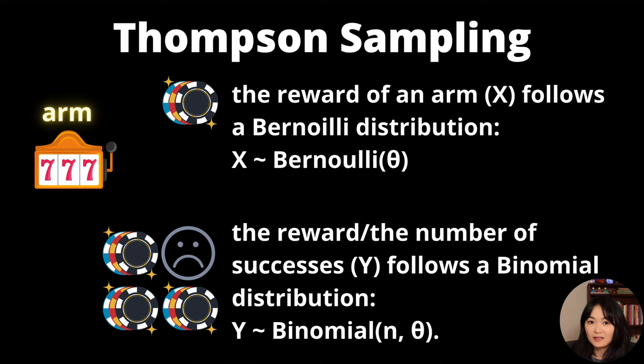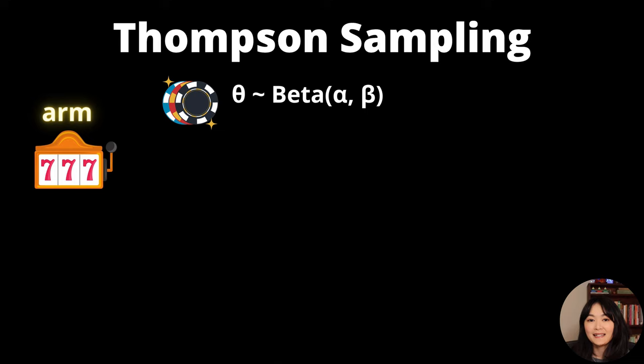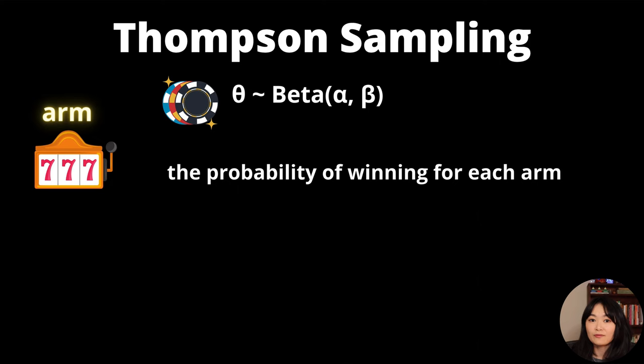Let's assume that the prior distribution of theta is beta with the parameter alpha and beta. Again, theta is the probability of winning for each arm. Our goal is to find what this theta is given our data, the probability of theta given y.